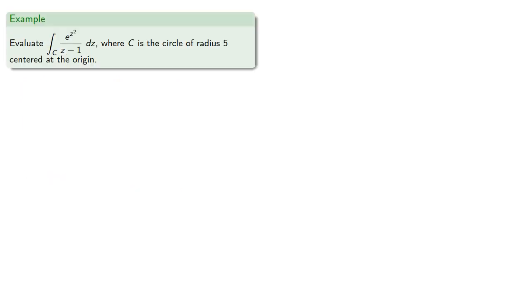For example, let's find this integral. We want to find a function that's analytic inside c where our integrand is f over the bad point. Comparing the two sides suggests that f is e^(z²).